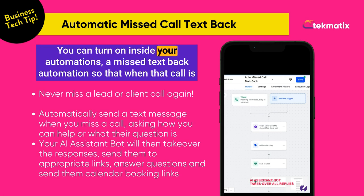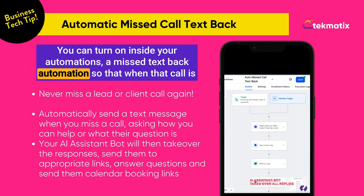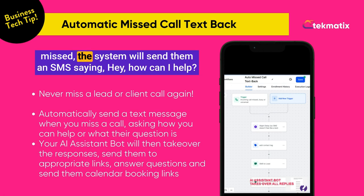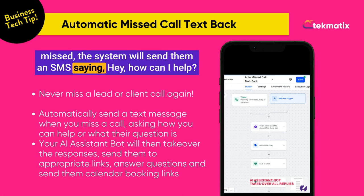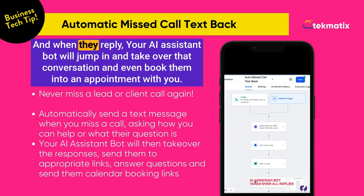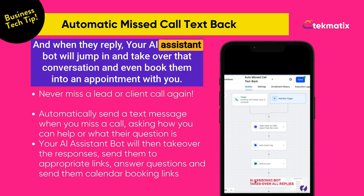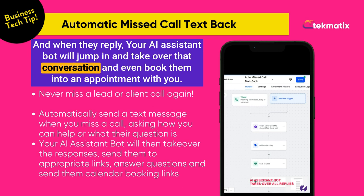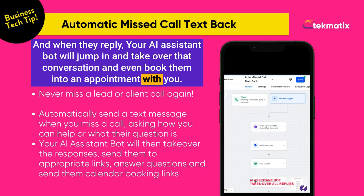You can turn on inside your automations a missed call text back automation, so that when that call is missed, the system will send them an SMS saying 'Hey, how can I help? Sorry I missed your call.' And when they reply, your AI assistant bot will jump in and take over that conversation, and even book them into an appointment with you.